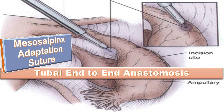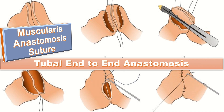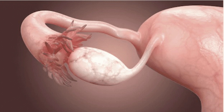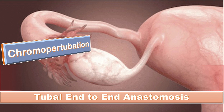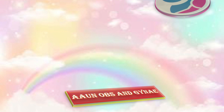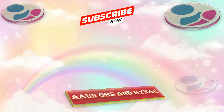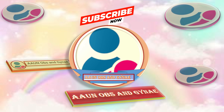The mesosalpinx adaptation suture application technique is also a preferred technique nowadays. Another technique is the muscularis anastomosis suture application technique. Lastly, chromoperturbation plays an important role — it involves instillation of dye through the fallopian tubes during laparoscopy, which permits better visualization of tubal patency. Thank you so much, that was all about tubal anastomosis and reversal of sterilization.